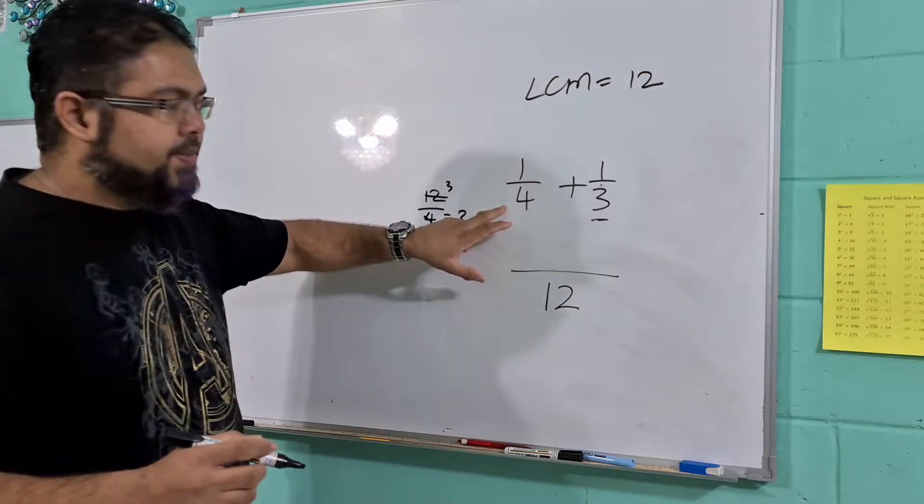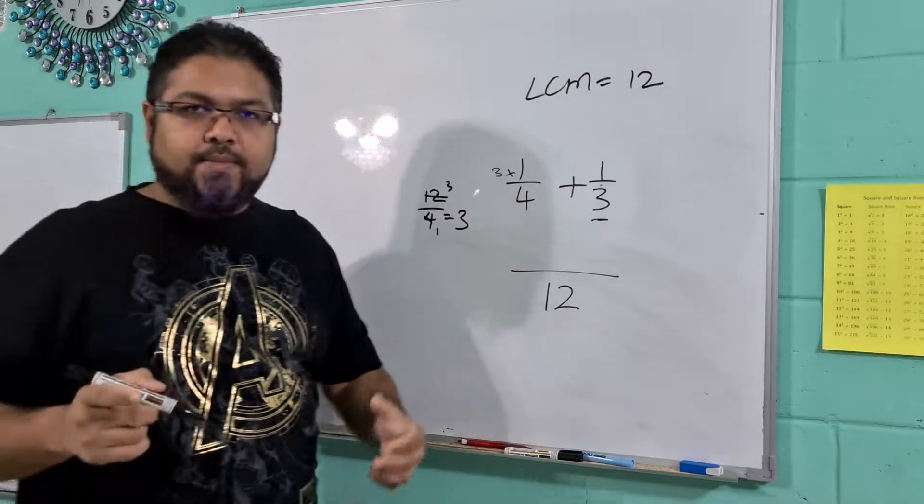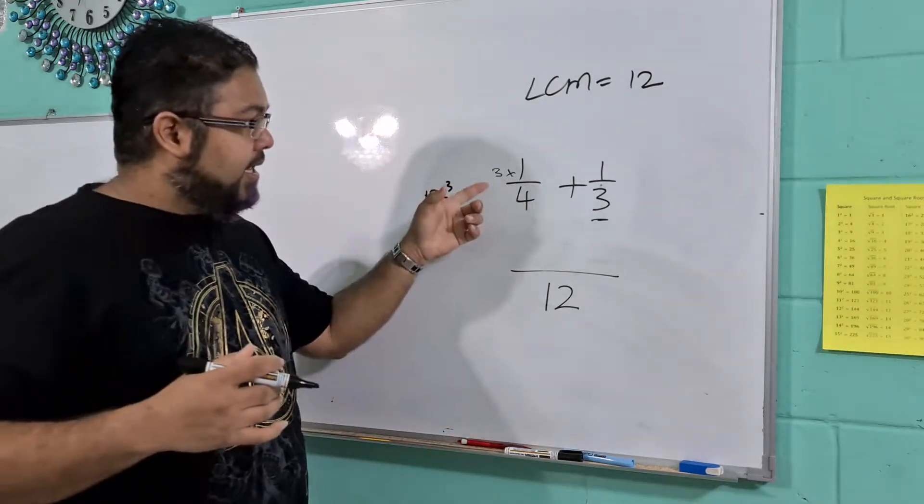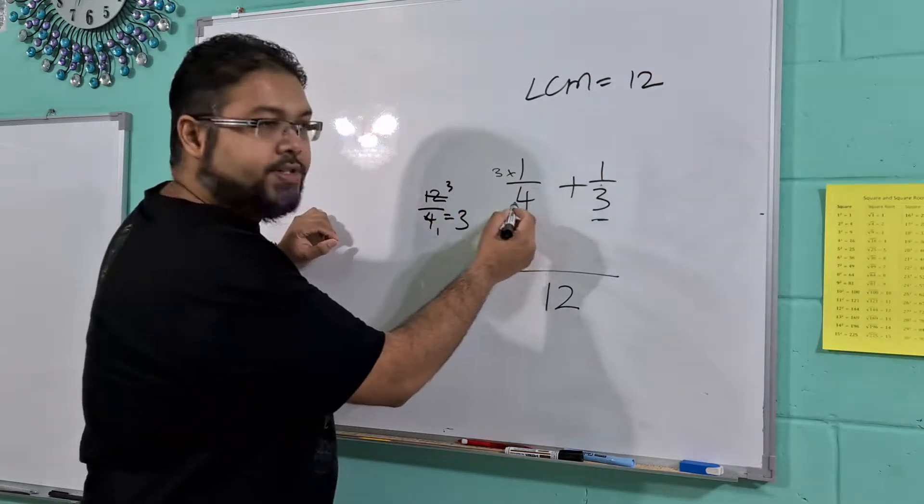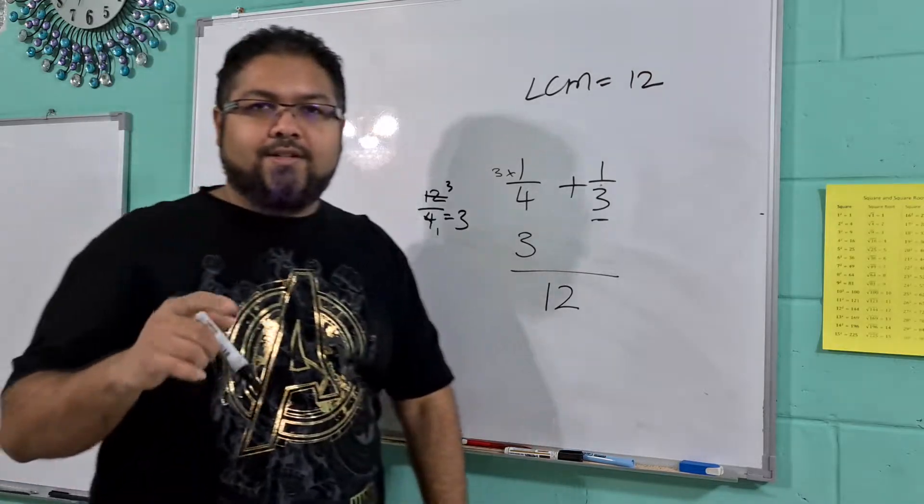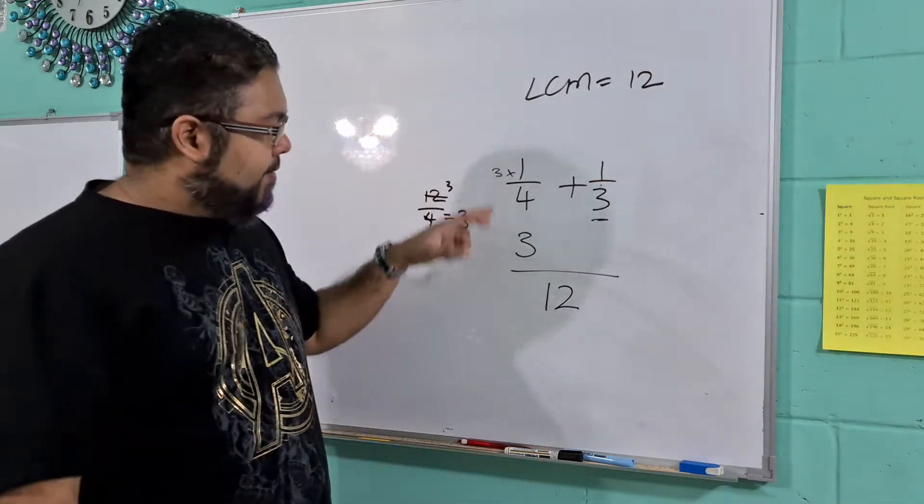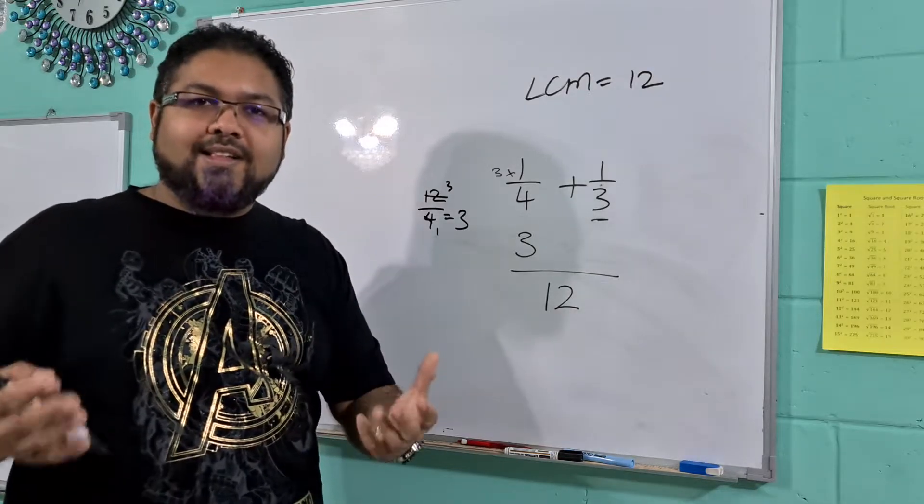12 divided by 4 is 3, and then you multiply the top number by that, the 3 that you guys get. So essentially 12 divided by 4 is 3, 3 times 1 will give you 3. Now look how cool this is. If we take 3 over 12 and we reduce it, we will get 1 over 4.